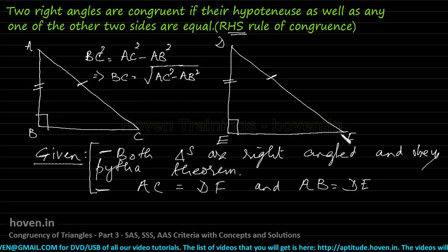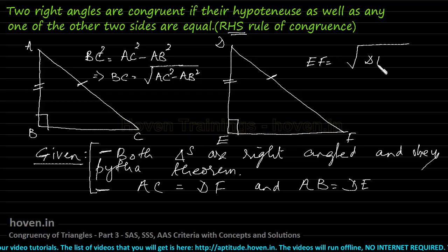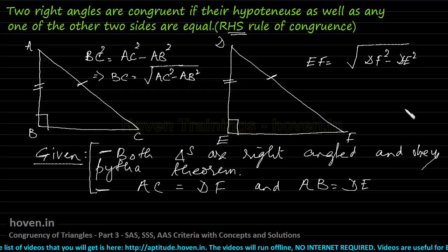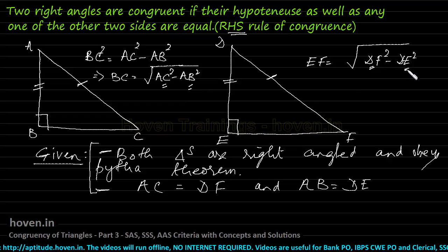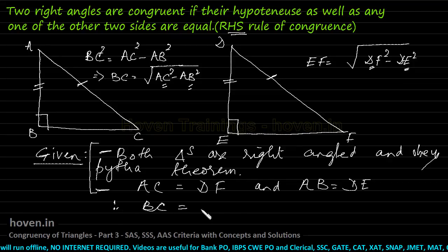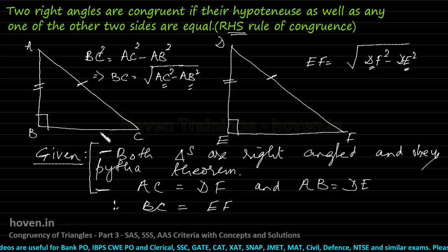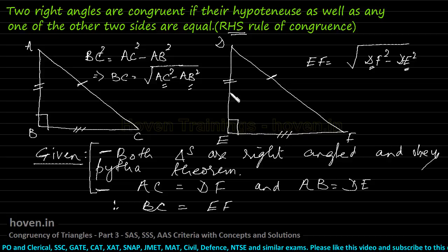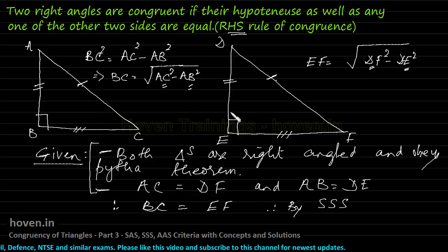Likewise, EF equals the square root of DF squared minus DE squared. Now we know AC equals DF and AB equals DE. Therefore BC also equals EF — this can be proved because it is constrained by the Pythagoras theorem. So: this side is proved equal to that, this is already given, this is already given, and this has been proved just now. Therefore by the SSS rule, the two triangles will always be congruent.